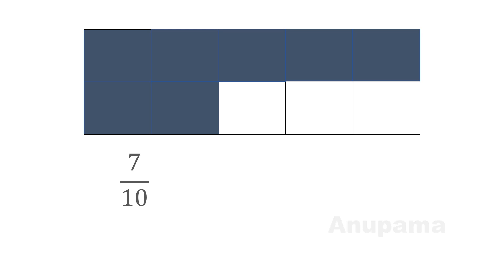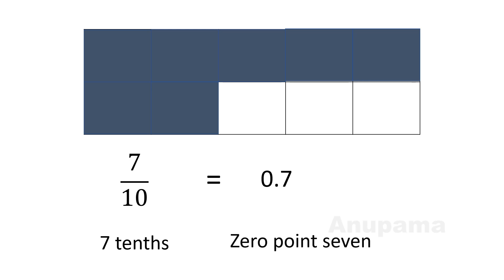Let us take one more example. Here is one more rectangle. I have shaded a few parts. This time, the total number of parts are 10, and I have shaded 7 parts. So the fraction of the shaded part is 7 by 10, or we can say 7 tenths. We can write this 7 tenths in the form of decimals also — 0.7 — and we read it as 0.7.